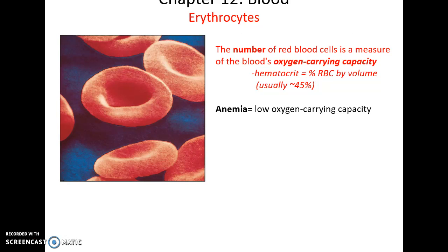The number of red blood cells can vary and is often measured to determine the blood's oxygen-carrying capacity. This value is referred to as the hematocrit — the percentage of red blood cells by volume in the blood — usually around 45%. If there's a low level of red blood cells, you might have anemia, or low oxygen-carrying capacity.